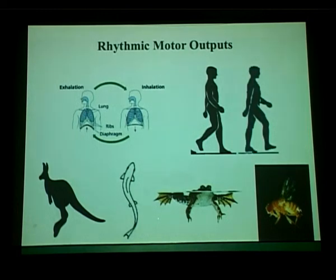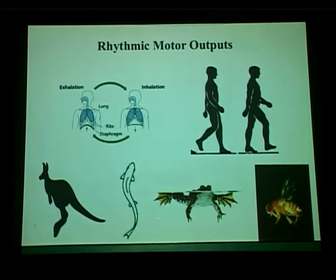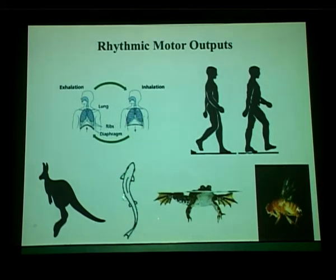For example, for you to take a single step forward, you need to generate an alternating firing pattern of the left and right limbs. And the same thing for fish: to swim, you need a coordinated relaxation and contraction of the dorsal, ventral, or anterior-posterior muscles.